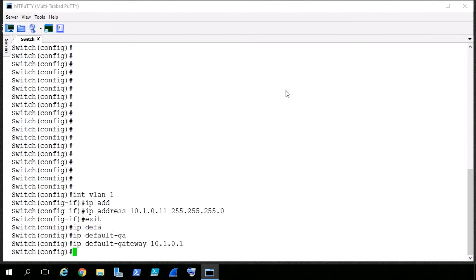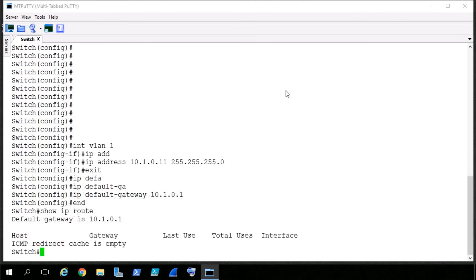We'll press enter. We'll type in end. And if we do a show IP route on this layer 2 switch and press enter, I can see that it has the default gateway set up. But I did a typo on the IP address. I wanted to use .100, not .11.